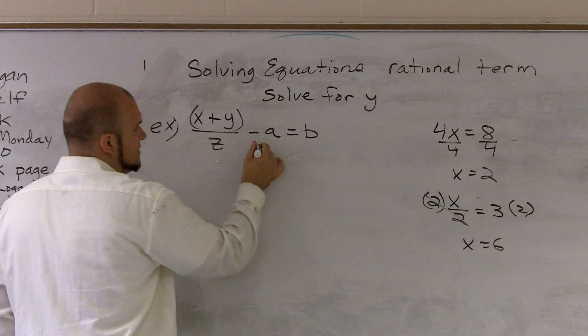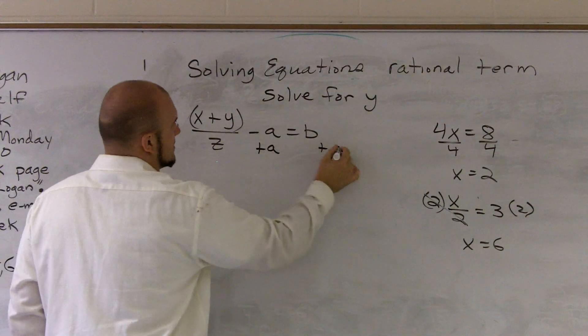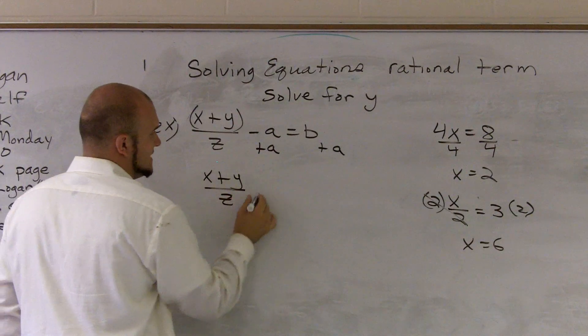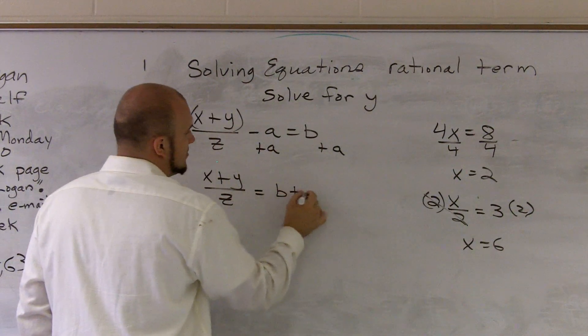So I'm going to add a to both sides. So now I'm left with x plus y over z is equal to b plus a.